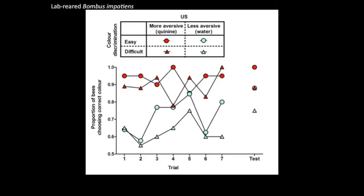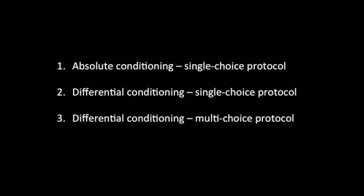When we used this multi-choice protocol on lab-reared Bombus impatiens, we found that it did yield enough data to see differences that you'd expect based on learning theory predictions. For example, bees trained with a more aversive unconditioned stimulus learned a lot faster than bees trained with just water. Similarly, there was a strong trend for bees trained to a more difficult discrimination to learn slower than bees trained to an easier discrimination. So even though the single-choice protocol does clearly demonstrate learning, we would recommend that if you want to detect fine-scale differences between groups, you carry out the multi-choice protocol.